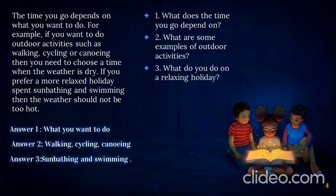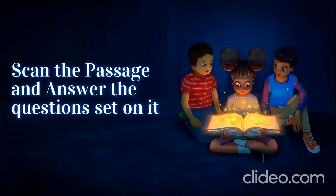After skimming and finding the general information, we find the answers. For the first question: what the time you go depends on — it depends on what you want to do. For the second question: outdoor activities include walking, cycling, and canoeing. For the third question: on a relaxing holiday you go sunbathing and swimming. This is how we skim the passage — reading to find only the selective information.